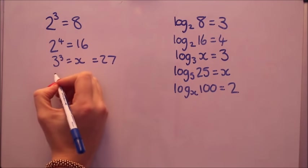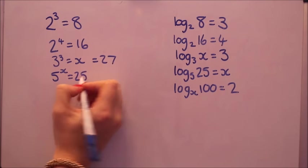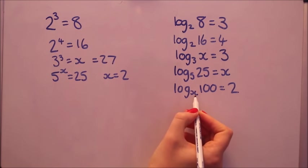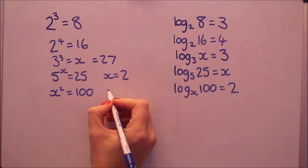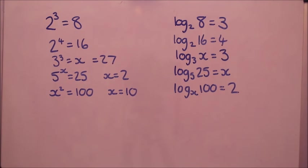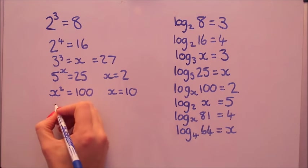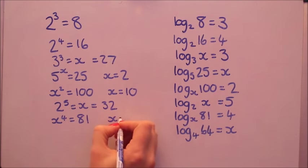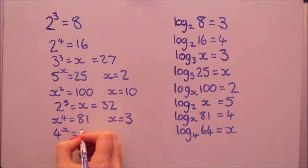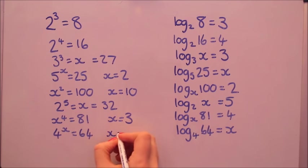For the next one, 5 to the x equals 25. Writing it like that, it's obvious now that x is 2. And for this one here, x to the 2 equals 100, so x has to be 10. I'm going to give you three more of those now. So please do pause the video and have a go yourself. Do keep practicing those if you're not quite there yet. But if you're comfortable, that's going to come in really handy when we solve equations.